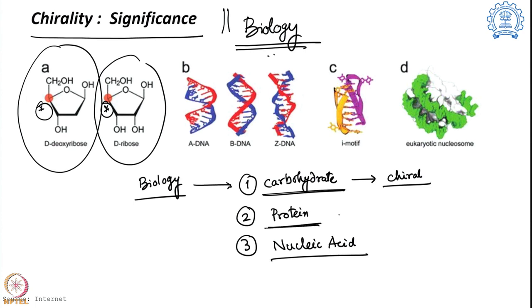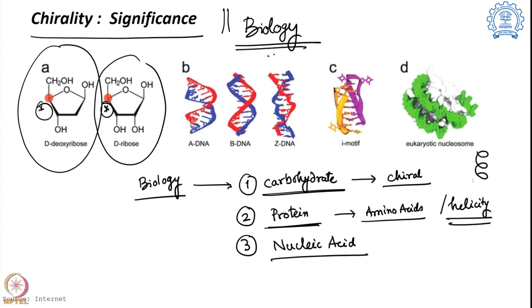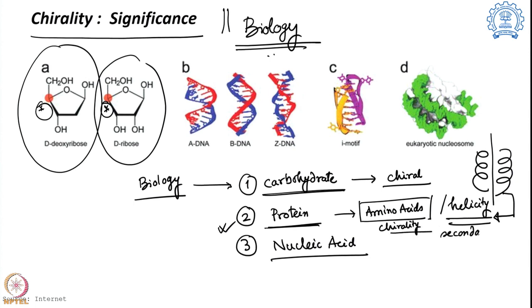Similarly, proteins are made out of amino acids. Almost all amino acids found naturally in biology — except one — are chiral in nature. When proteins are made from these chiral amino acids, the system will also be chiral. At the same time, proteins create secondary structures which also have their own chirality, especially helicity. This helicity in the secondary structure brings additional chirality, so our protein system becomes chiral.